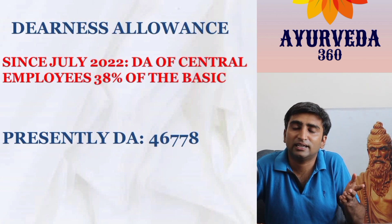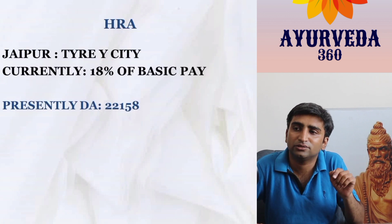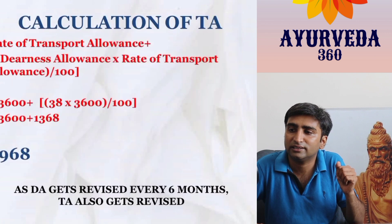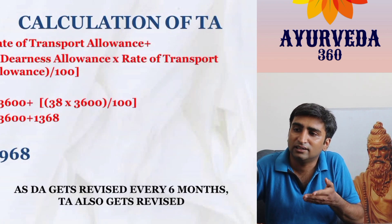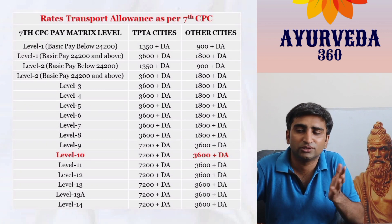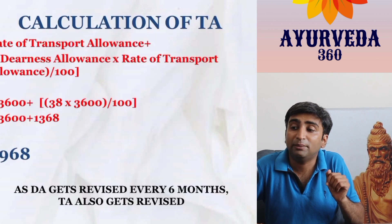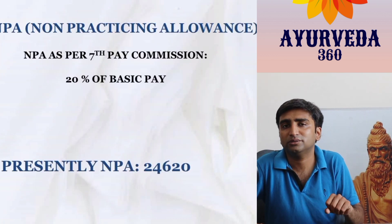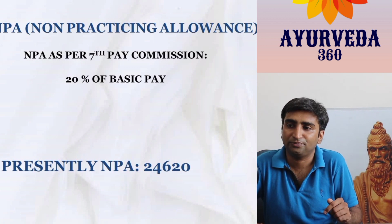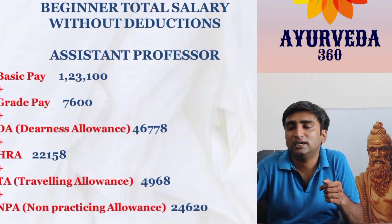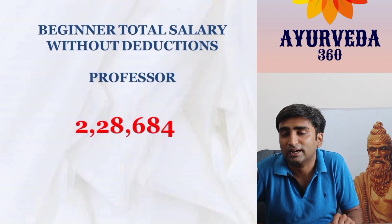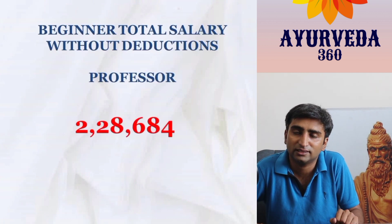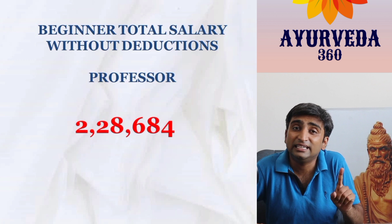For Professor, HRA at 18% of the basic comes to approximately ₹22,000. TA remains the same as other levels. NPA at 20% of ₹1,23,100 comes to approximately ₹25,000. Adding all components, a Professor at NIA at the initial level currently earns approximately ₹2,28,684 gross.